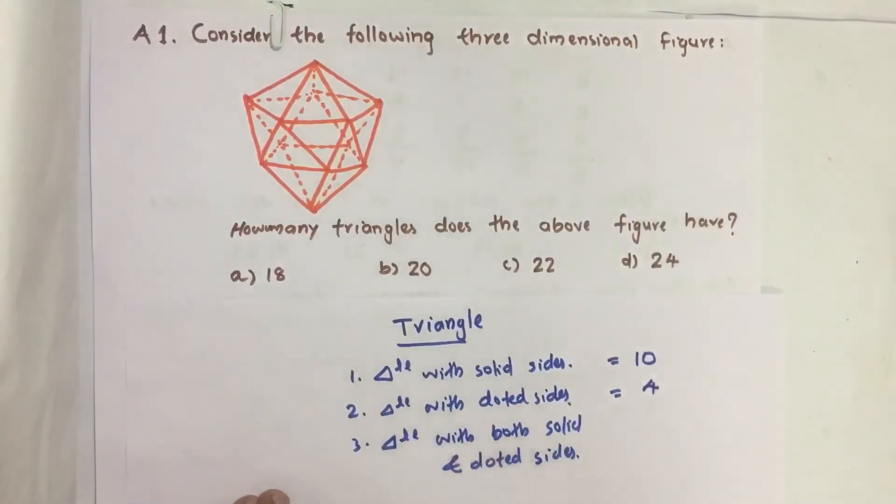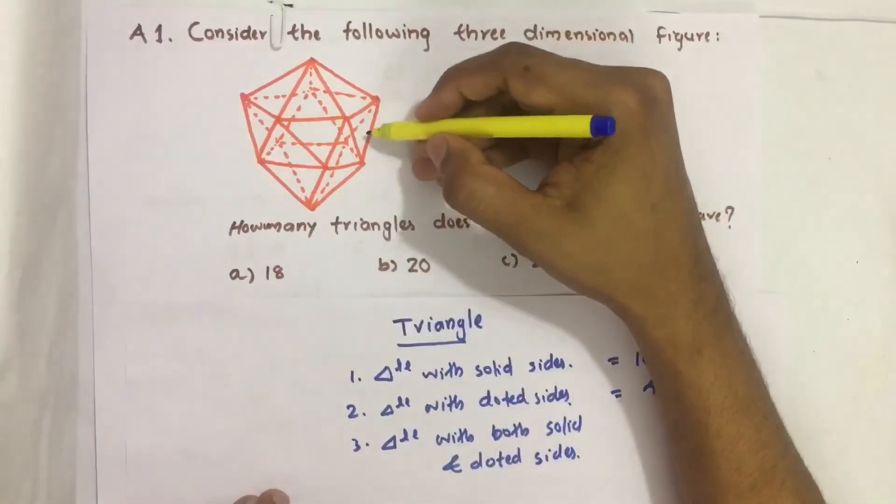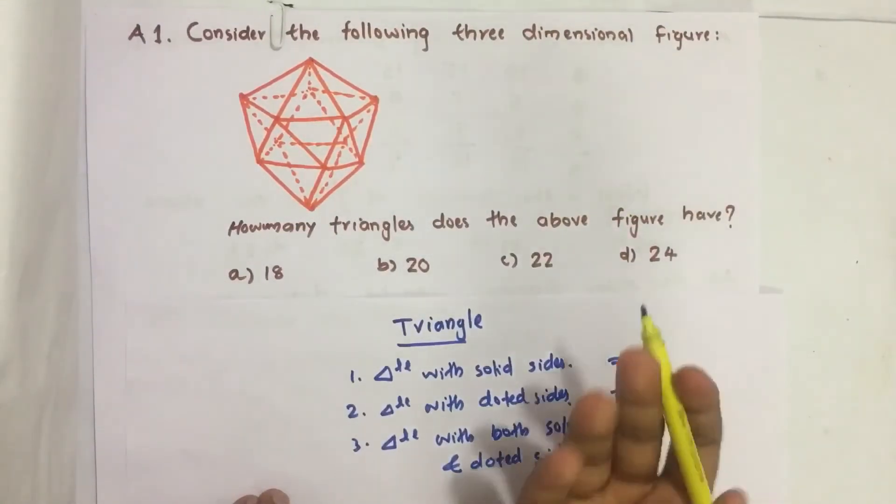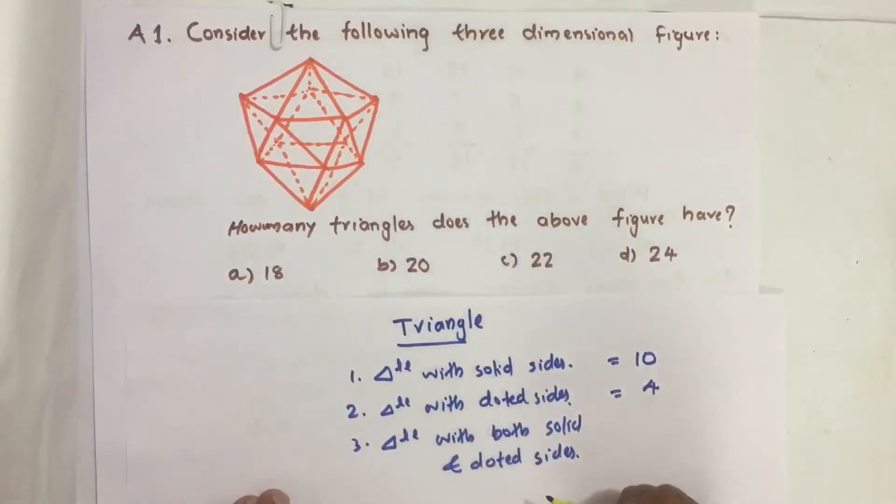So we already counted the solid and dotted sided triangles. Now next we have to count triangles with both solid and dotted lines.